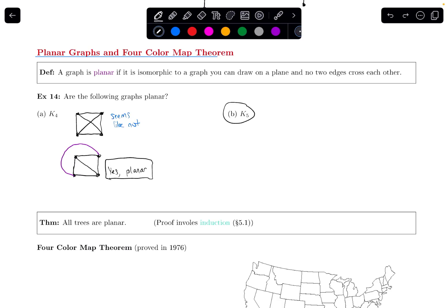So what about K5, a complete graph with five vertices? Is it possible to draw this in some way so that none of the edges cross each other? Let's try it. Let's try maybe first I'll draw all of these edges connecting around the outside.